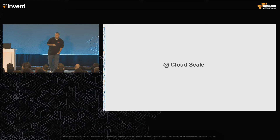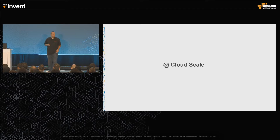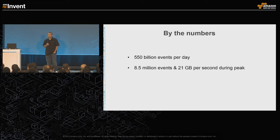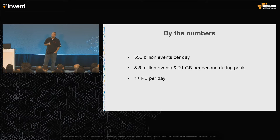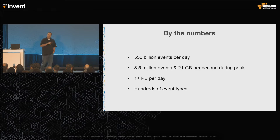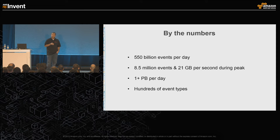Cloud scale is a term people throw out a lot, so what does it mean for us? We do 550 billion events a day. At peak, we're at 8.5 million events and 21 GB per second. On average, we're at 6.5 million. We push over a petabyte through our pipeline on a daily basis, and we have hundreds of different event types. We started this process for Keystone in Q4 of last year — at that time we were at 3.5 million per second, 300 billion. Now it's 6.5 million and 550 billion. It's essentially doubled over the last year.